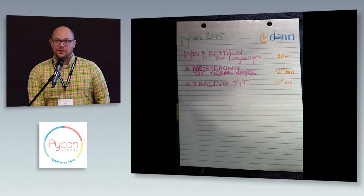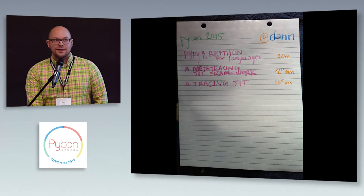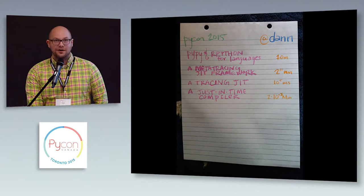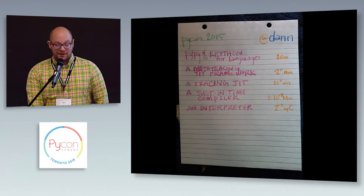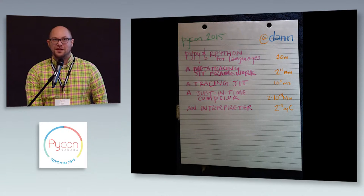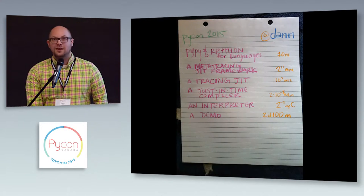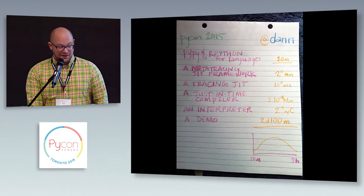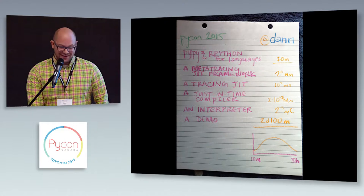But before I can do that, I have to tell you what a tracing JIT is because we're going to make one of those. And then before I can do that, I have to tell you what a just-in-time compiler is. And then I have to tell you about a compiler and then I have to tell you about an interpreter. So that's a lot to get through. And I've got a demo. So hopefully that all adds up to about 10 minutes, which is how long I have to talk. Except it doesn't. Not even close.